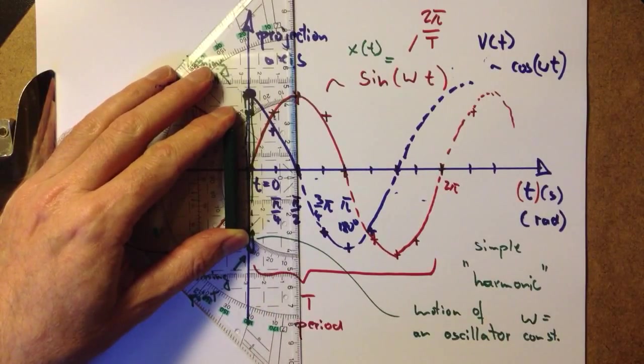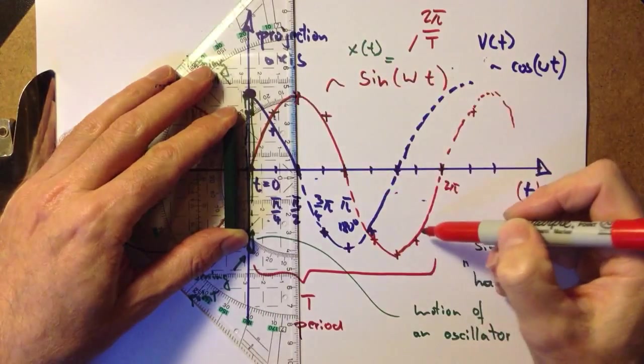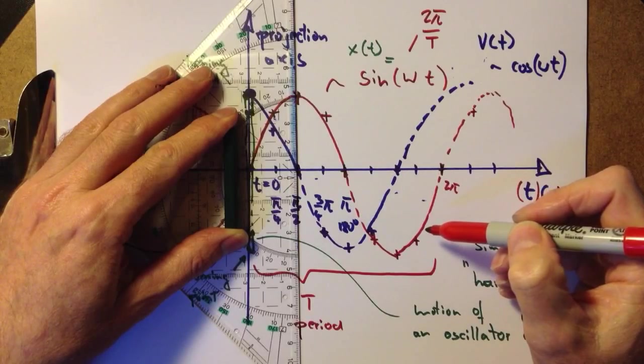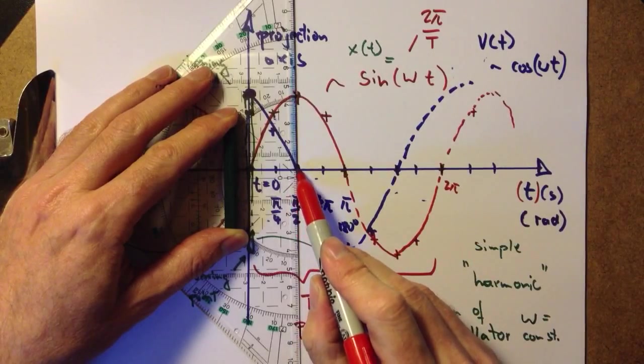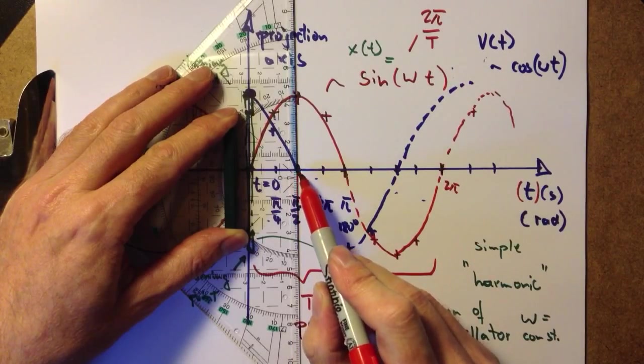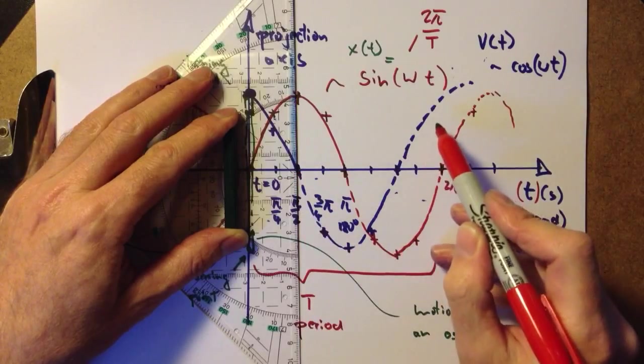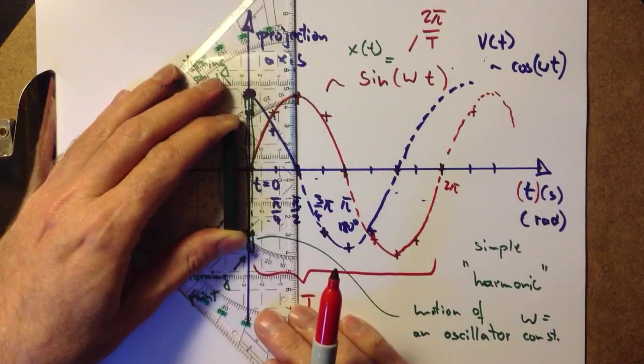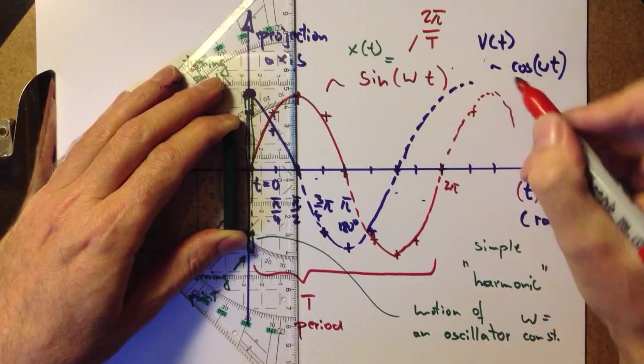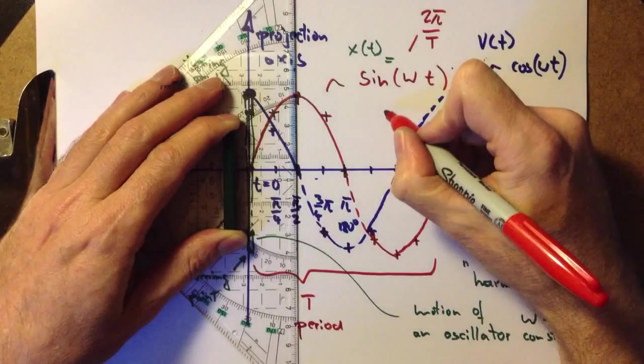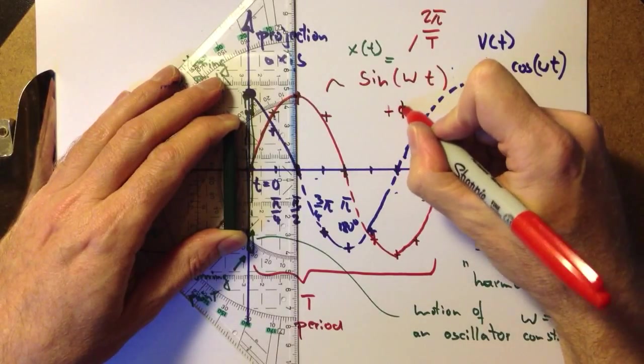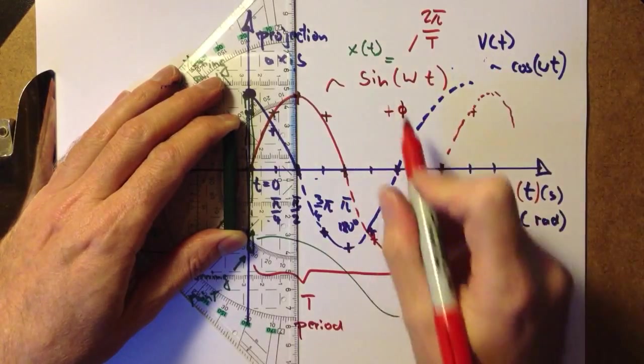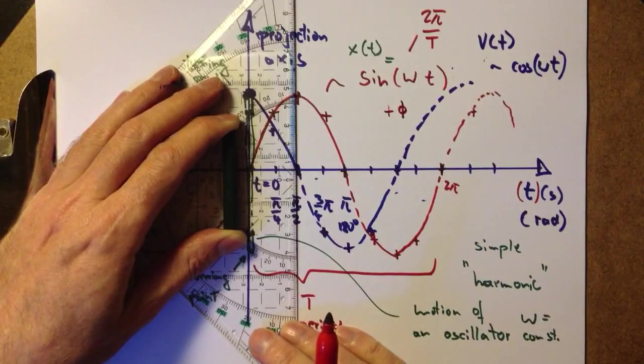Now our position function is a cosine function, and our speed function has become a minus sine function. These kinds of shifts are referred to as phase shifts, and they can be included in the description by including a constant plus φ in the argument of the sine function or the cosine function.